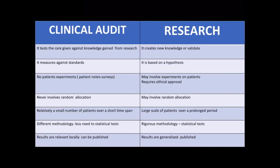In audit, it measures against standards, while in research it is based on hypothesis. In audit, there are no patient experiments — just patient notes and surveys. While in research, it may involve experiments on patients and may require ethical approval. In clinical audit, it never involves random allocation, while in research it may involve random allocation.